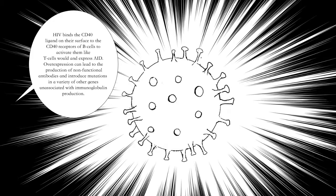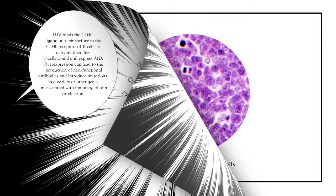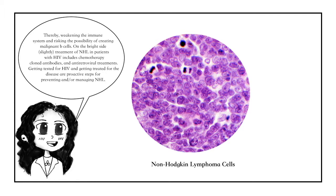Overexpression can lead to the production of non-functional antibodies and introduce mutations in a variety of other genes unassociated with immunoglobulin production, thereby weakening the immune system and risking the possibility of creating malignant B-cells.